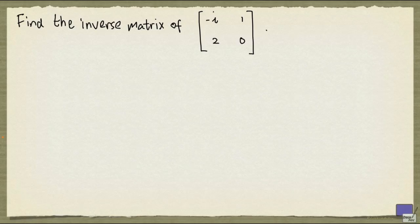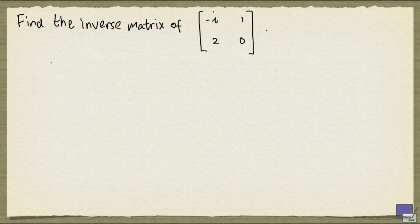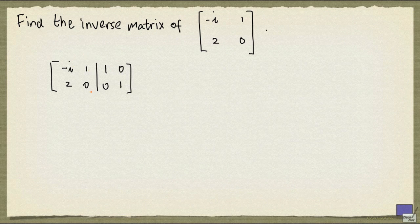We're going to find the inverse matrix of this matrix with complex entries. The way to do this is we first augment this matrix with the 2 by 2 identity matrix, and then perform row reduction until we get down to a matrix in reduced row echelon form.